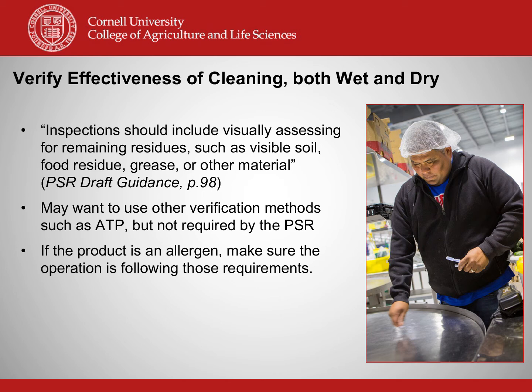Before you sanitize, it is critical to make sure your cleaning step has been effective. The FSMA Produce Safety Rule draft guidance notes that inspections should include a visual assessment for remaining residues, such as visible soil, food residue, grease, and other materials. Some operations may choose to use methods beyond visual inspection, such as ATP testing. It is also worth mentioning that if your operation handles any allergens, you should be following any requirements necessary to prevent cross-contamination.